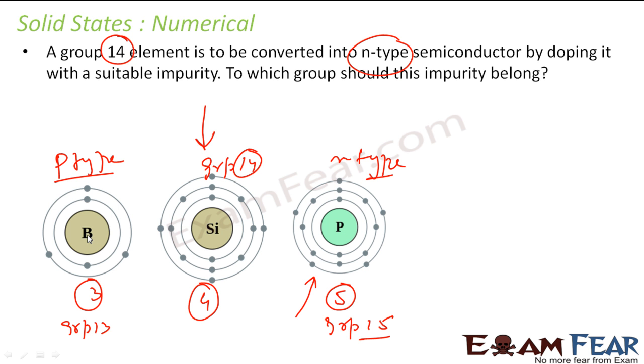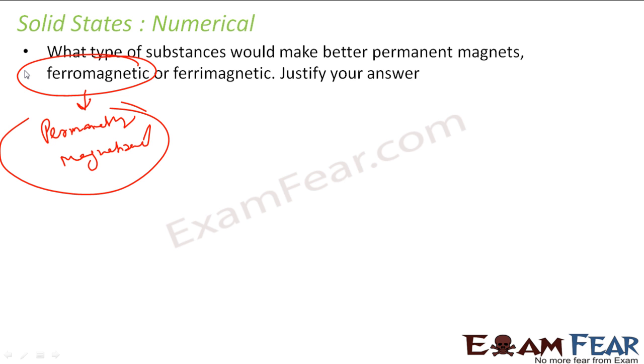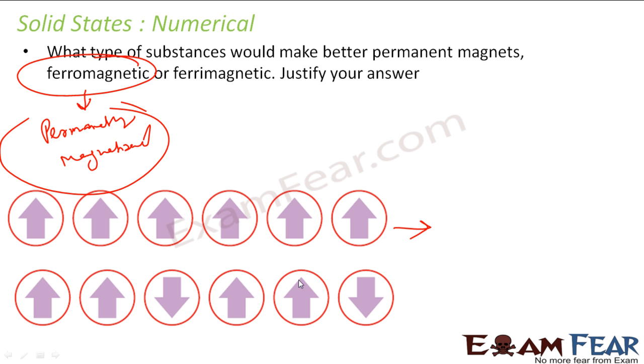What type of substance would make better permanent magnets, ferrimagnetic or ferromagnetic? So we have seen that ferromagnetic is something which can be permanently magnetized. Why? Because the ordering of domains is maintained even after removing the electric or magnetic field. You see, this is my ferromagnetic substance and this is my ferromagnetic substance after applying electric field. So this is a better option.